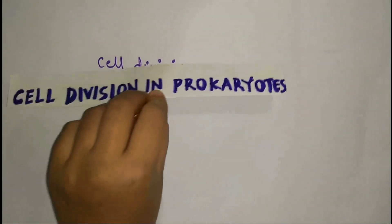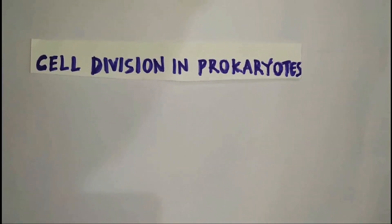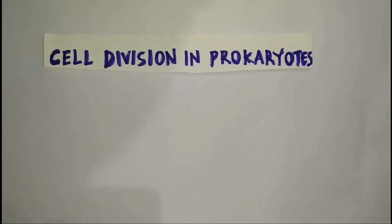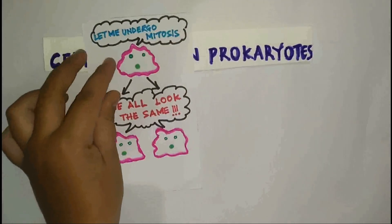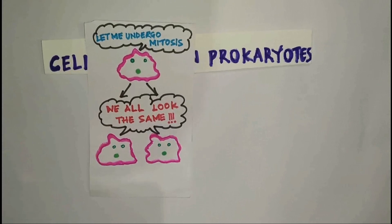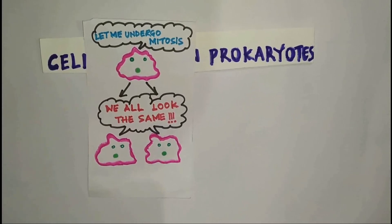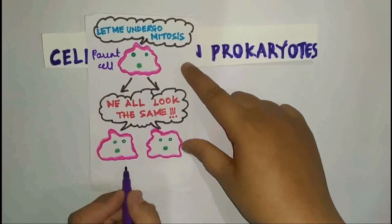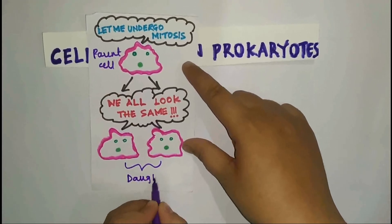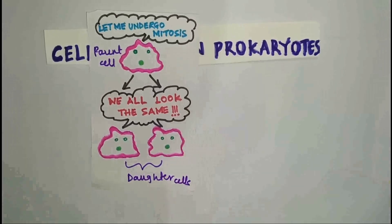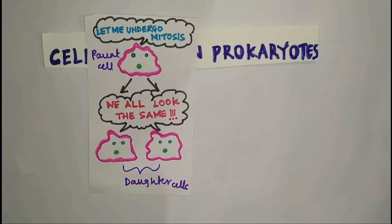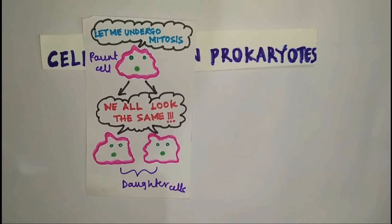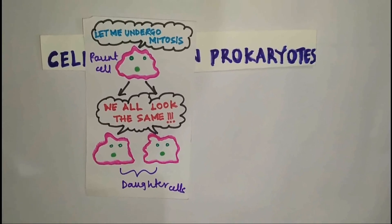In this video we are going to talk mainly about cell division in prokaryotes. The cell division that occurs in prokaryotes is with the help of a process called mitotic cell division. In this mitotic cell division, the parent cell and the two daughter cells are exact copies of one another — they are clones of the parent cell. Clones means exact copies, like a xerox copy.